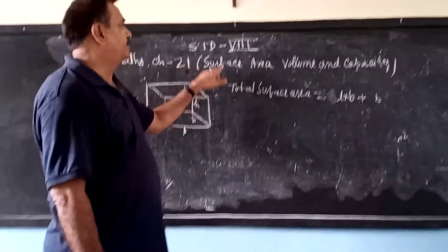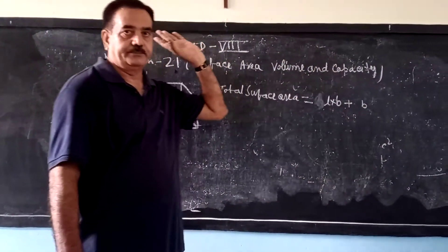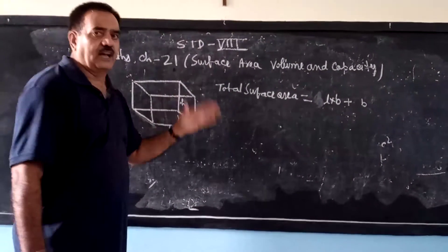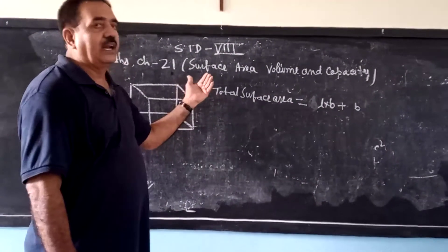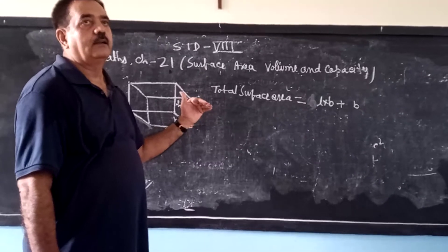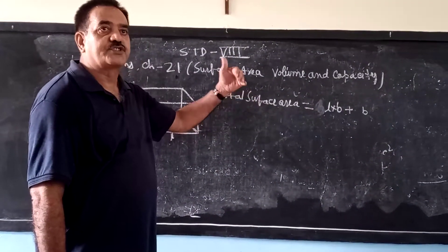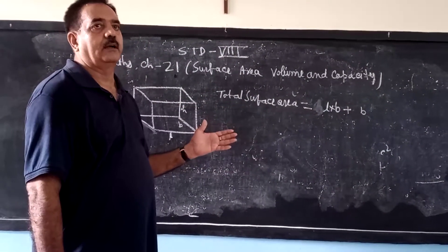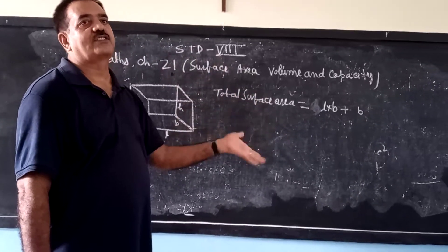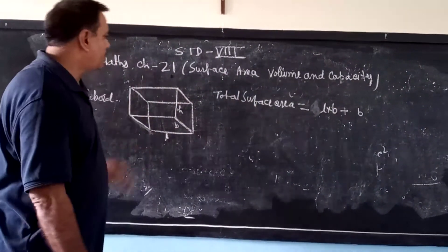The name of the chapter is Surface Area, Volume and Capacity. So two figures are there. If you can understand the figure and how the formula is derived from the figure, easily you can solve one-to-one questions of the exercise.